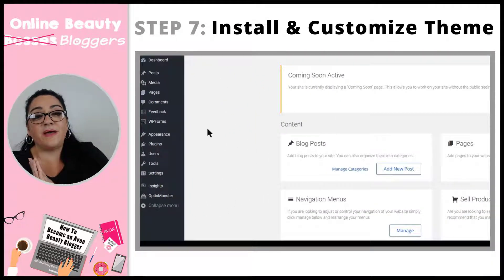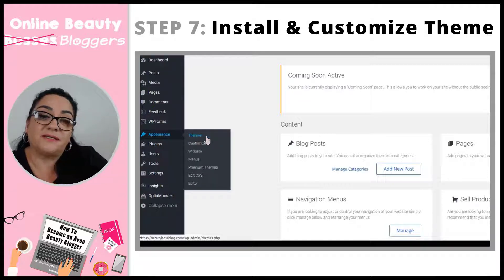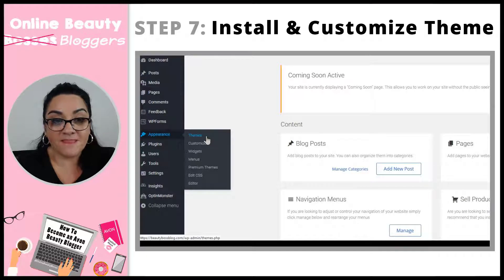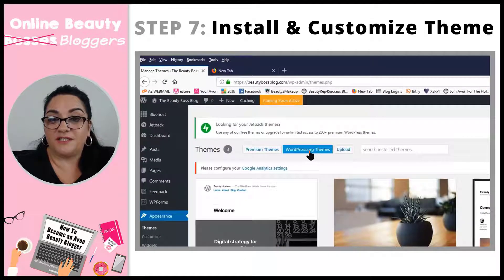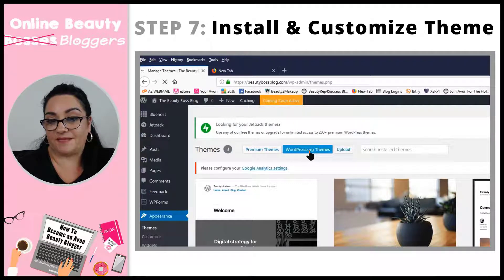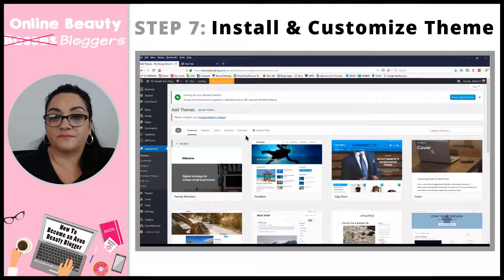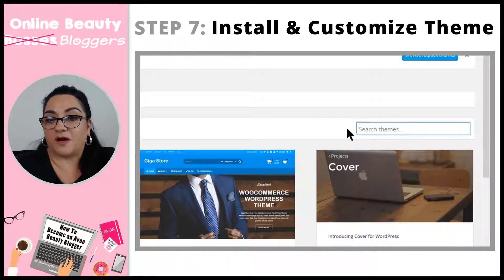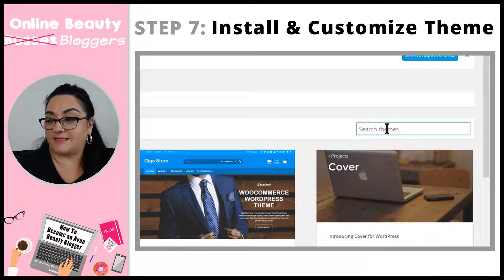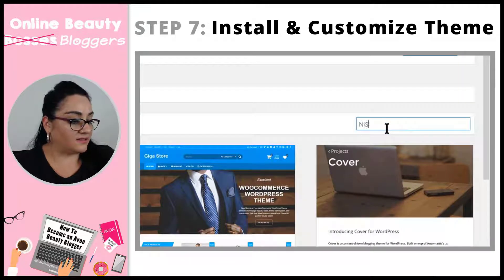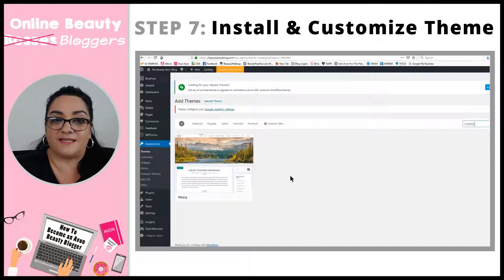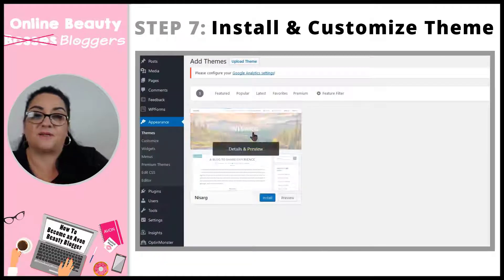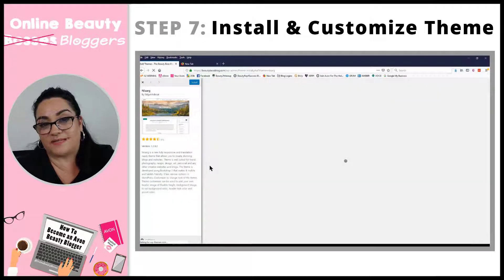We're going to go back to the left sidebar, go to Appearance and click Themes. Then go to WordPress Themes where the free themes are. In the search bar, type in Nisarg — N-I-S-A-R-G. And there it is — that's the theme we're going to use to build out our blog. That's the same theme I used in the example. It's nicely formatted and it looks nice.